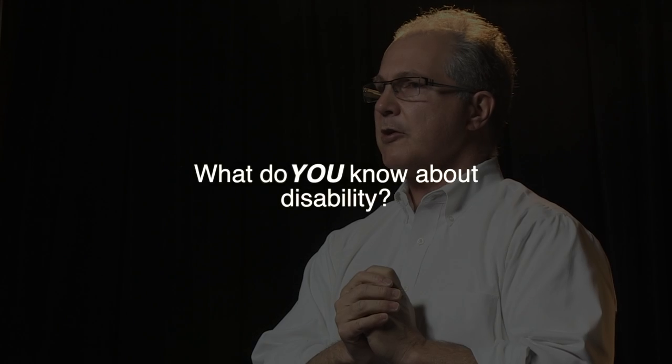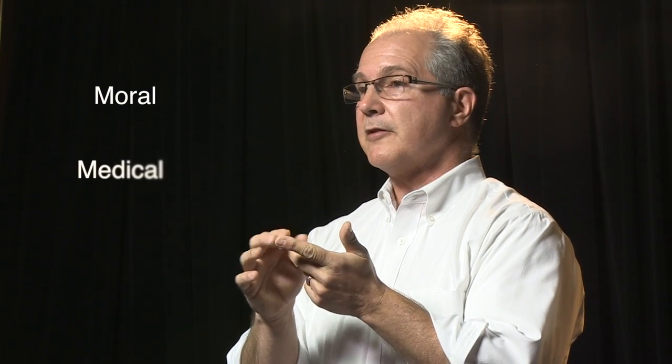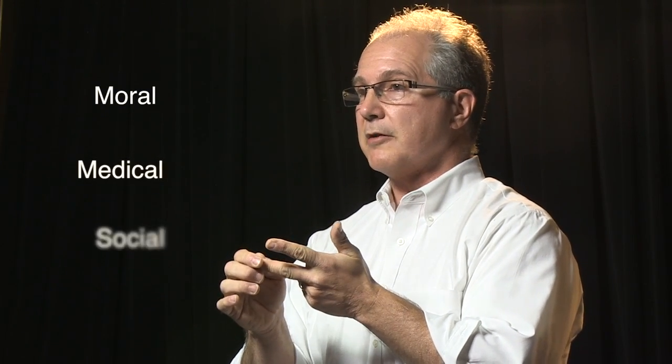One of the things that we know about disability is that perhaps the single biggest barrier relates to attitudes — how do people perceive you, how do people think of disability? There are three models that we'll talk about: one is called the moral model, one is called the medical model, and the third is the social model.